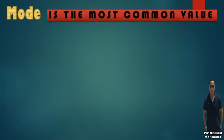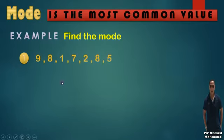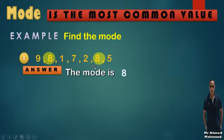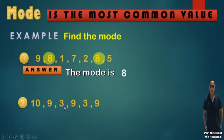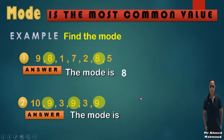Now I'm going to explain the mode of some values. The mode is the most common value — the most repeated value. We have studied the mean, mode, and median in first and second prep, and because it's very important, we will study these concepts again this year. For example, find the mode of 9, 8, 1, 7, 2, 8, and 5: 8 is repeated most, so the mode is 8. Another example: from 10, 9, 3, 9, 3, 9 — 3 is repeated 2 times and 9 is repeated 3 times, so the mode is 9.